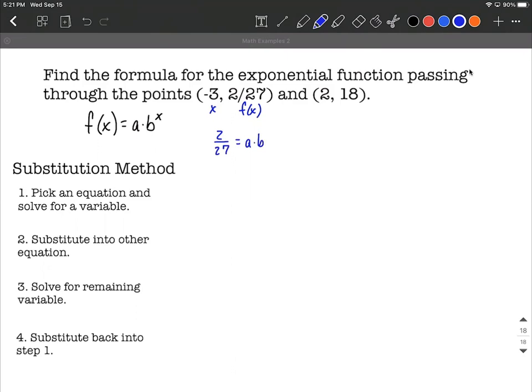Then we have a times b raised to the negative third power on the right hand side. I'm going to do something very similar with the eight and the eighteen, where we can rewrite this as 18 equals a times b to the second power.